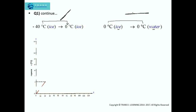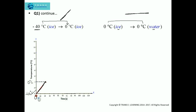First, let us plot the graph when ice gains heat and the temperature changes from minus 40 degree Celsius to 0 degree Celsius. The initial temperature is minus 40 degree Celsius. It has gained heat, the temperature has risen, and it reaches 0 degree Celsius. I have taken the starting point as O and the endpoint as A, so the change in temperature from minus 40 to 0 degree Celsius is represented by line OA.